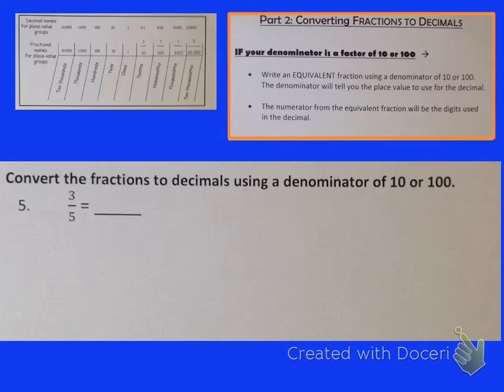So let me show you what I mean. We are going to convert 3 fifths to a decimal using a denominator of 10 or 100. Either one would be doable here, but we want to pick the one that's easiest. I think 10 would probably be easier than finding an equivalent fraction with a denominator of 100. Now remember, to find an equivalent fraction, we're either going to multiply or divide. I can't divide 5 by a number and get 10, I have to multiply 5 by something to get 10. I have to do 5 times 2.